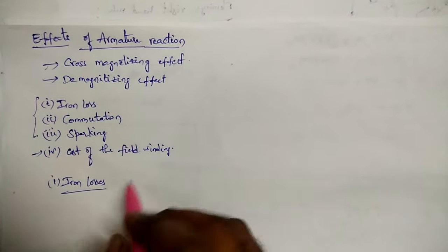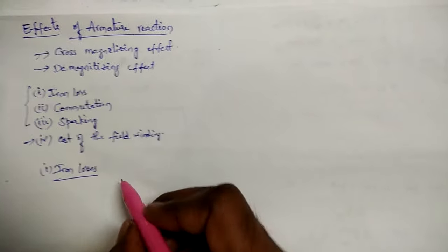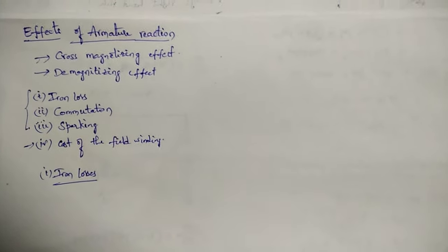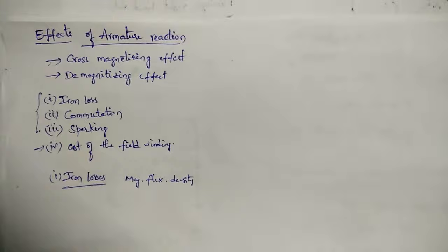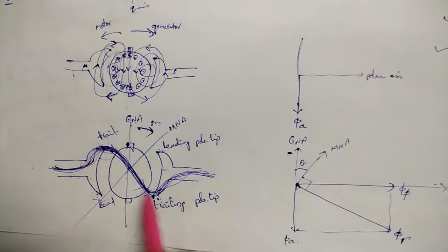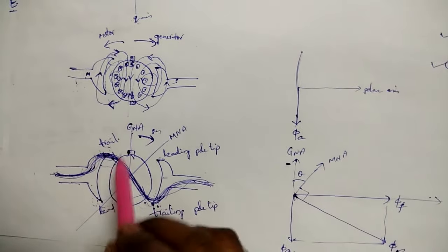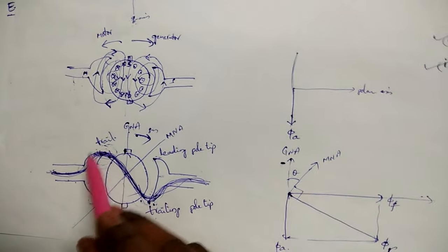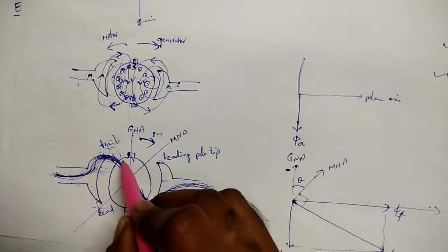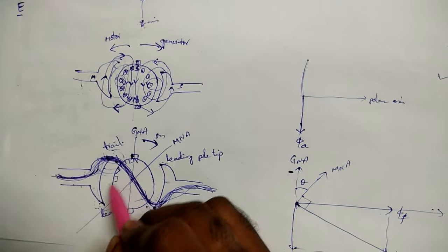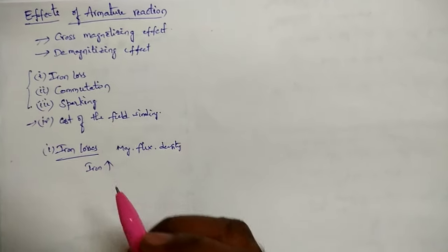Iron losses depend on the magnetic flux density in the teeth and pole shoes — it depends on flux density, not the flux itself. Because of the cross-magnetizing effect, the main field flux is distorted, so in some regions the flux density will be more. Because of this increased flux density in the pole shoes and teeth, the iron losses will be increased.